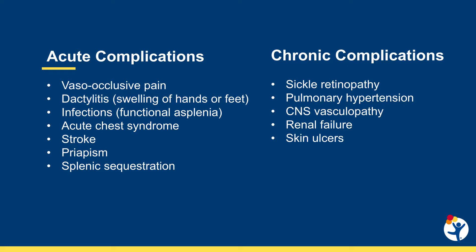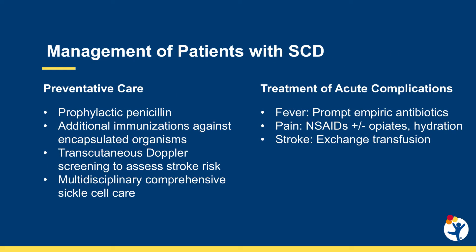Chronic complications may include pulmonary hypertension, CNS vasculopathy, sickle retinopathy, renal failure, and skin ulcers. Patients with the most severe genotypes including homozygous sickle cell anemia and sickle beta 0 thalassemia should start penicillin prophylaxis within the first two months of life. All patients with sickle cell disease regardless of genotype should receive additional immunizations against encapsulated organisms and prompt evaluation and treatment of fevers with blood cultures and empiric antibiotics.